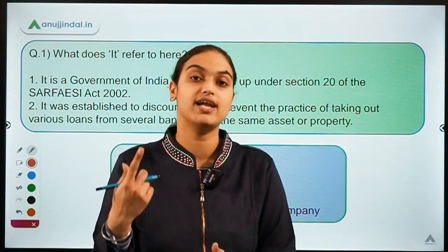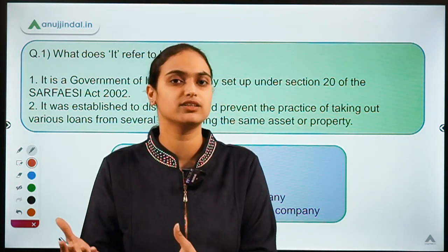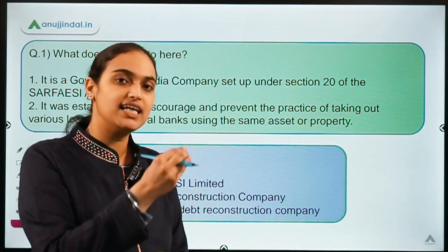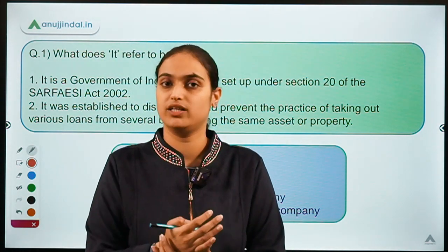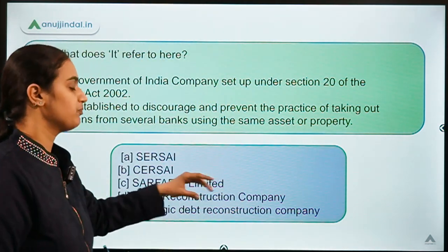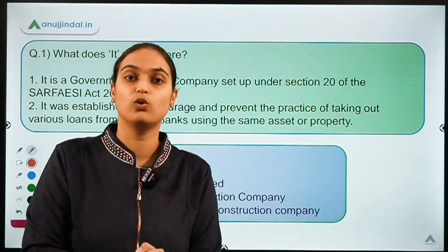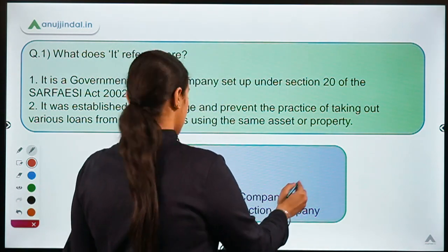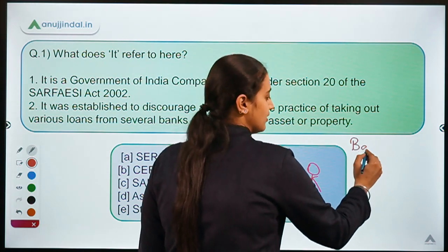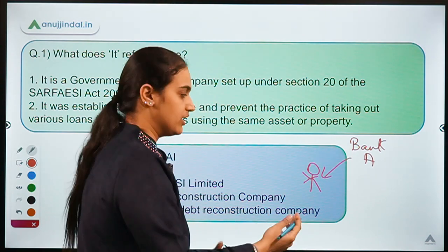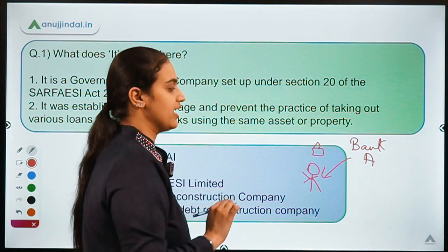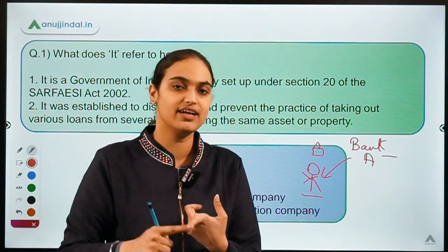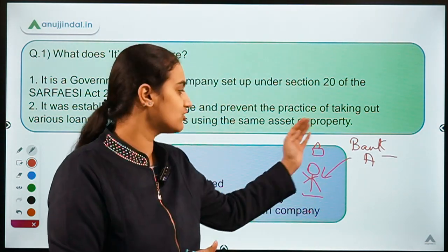As already explained under the SARFAESI Act session, if you are not able to repay, the right over your property passes to your lender, who may manage, reconstruct, securitize it, or enforce the security interest and sell or manage that asset to recover the amount. The problem was that only the lender and the borrower had information about the loan — there was no central registry where such transactions were registered.